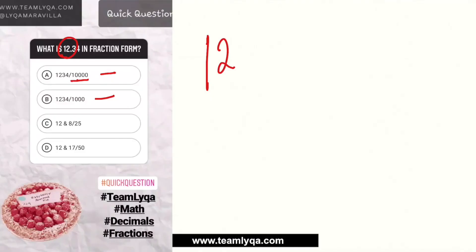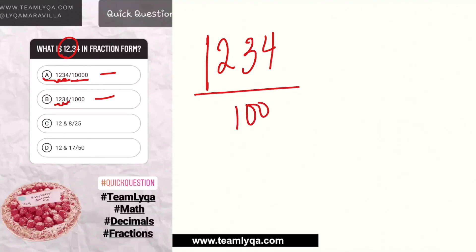Sobrang layo yan, ilang decimal yan. Ito naman 1, 2, 3 — 1 point something lang yan, so kulang. Now, kung ito ay naging 1,234 over 100, pwede pa. Now, bakit? Kasi dalawa lang naman yung decimal place na nandun. Ito pwede pa. Kaya lang, again, improper fraction ito kasi mas mataas yung nasa taas — mas malaki yung numerator.